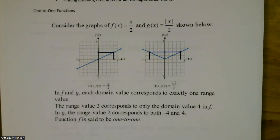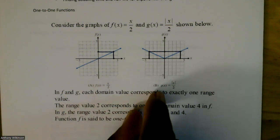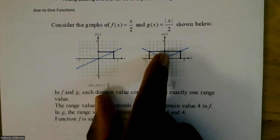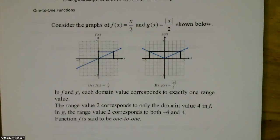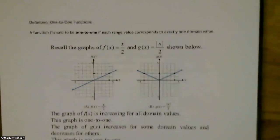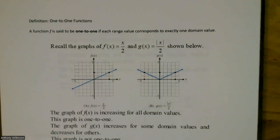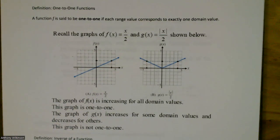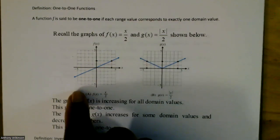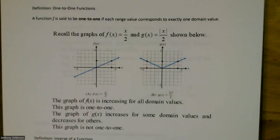f(x) = x/2 is considered a one-to-one function because for every y, you're only going to get one x. g(x) is not one-to-one because for the y-value of 2, you get two different x-values: negative 4 and positive 4. A function is said to be one-to-one if each range value corresponds to exactly one domain value. The graph of f is increasing for all domain values, while g increases for some domain values and decreases for others.